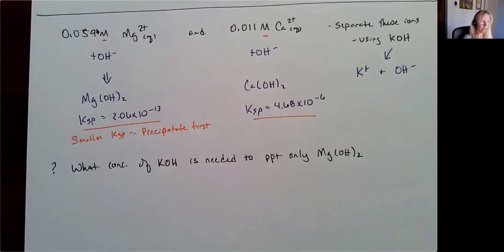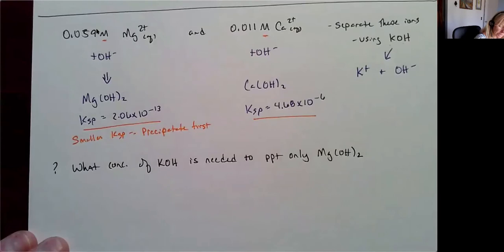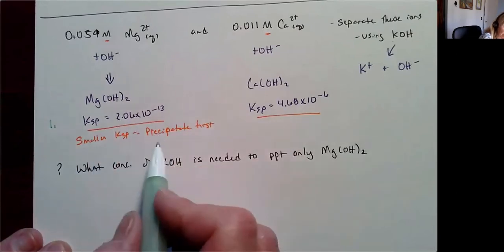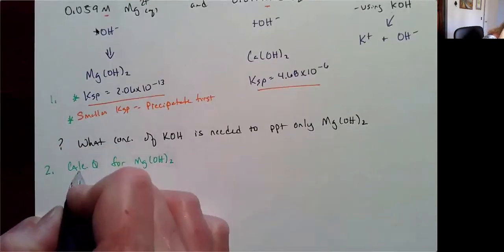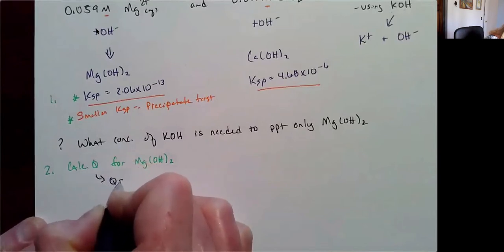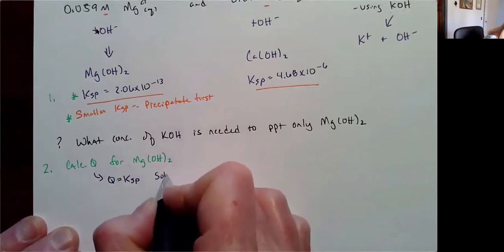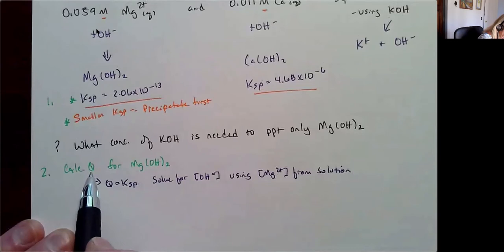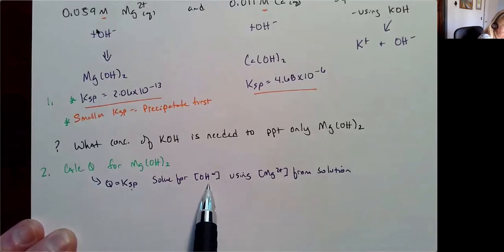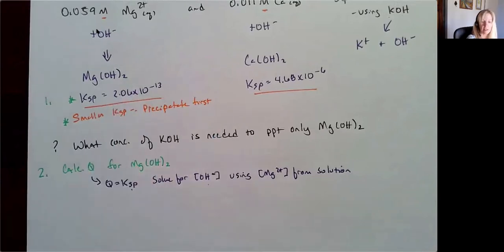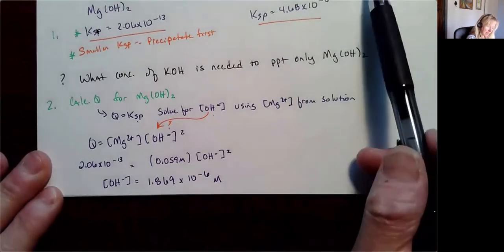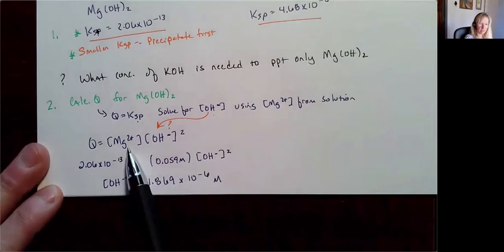I don't want to add too much because then magnesium will precipitate out, and then once I've used up all my magnesiums, calcium will start precipitating. I want to have some finesse so that I add in only enough to precipitate the magnesium and leave the calcium in solution. So I'm going to use Q in a calculation — I'll set Q equal to Ksp and solve for hydroxide ion concentration using my magnesium concentration. That's going to tell me the concentration of hydroxide I need to add to selectively precipitate magnesium.